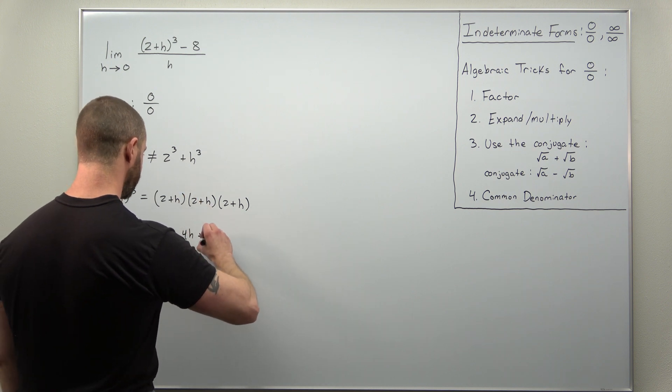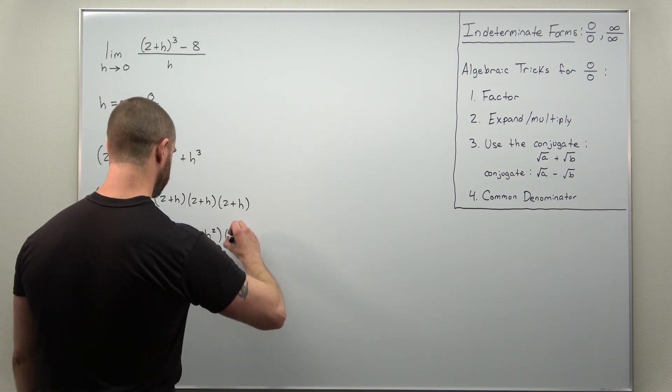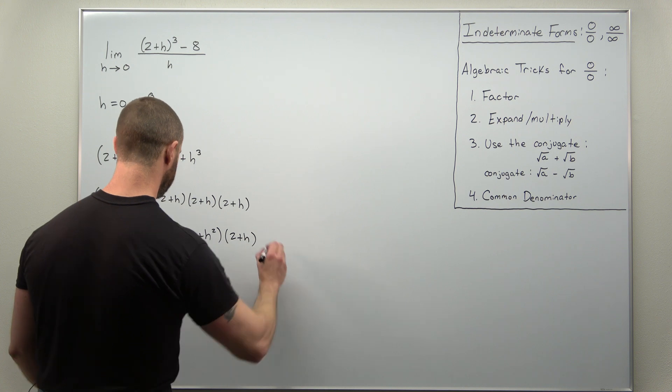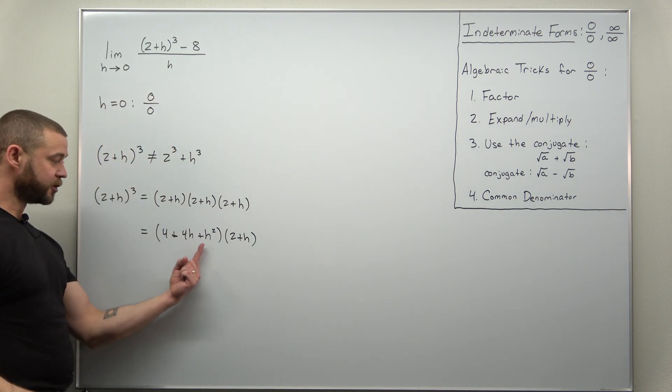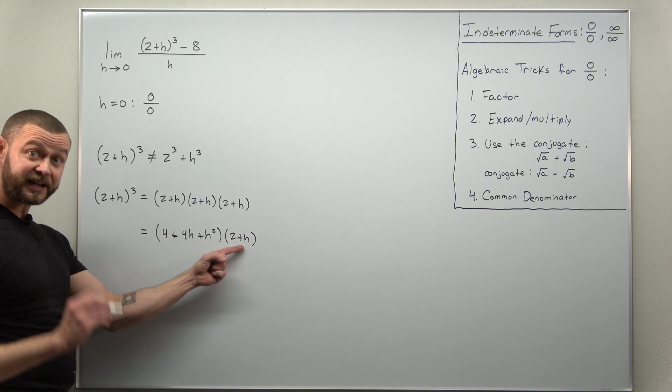and then plus h². And that's multiplying (2 + h). And now we're going to take every term in the first set of parentheses and let it multiply every term in the second set of parentheses.